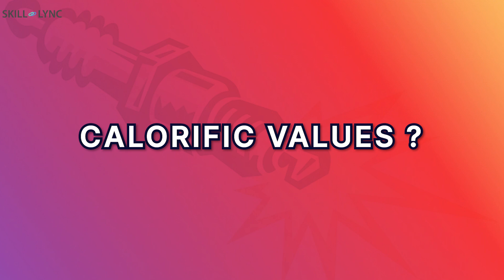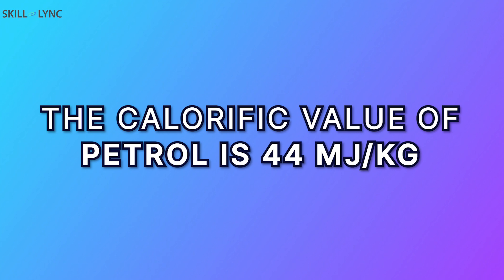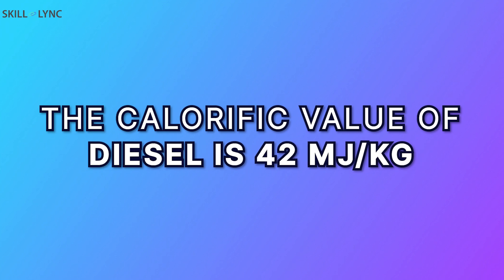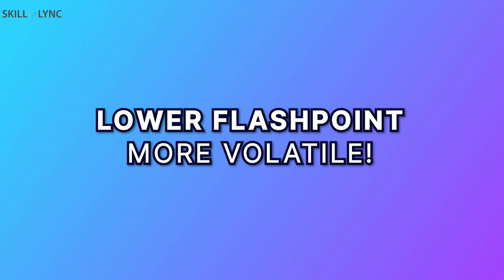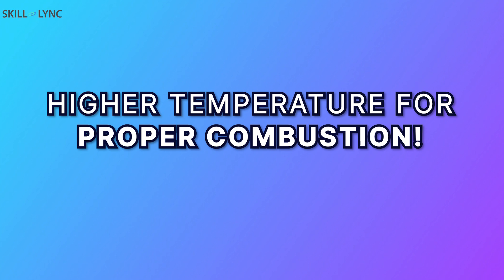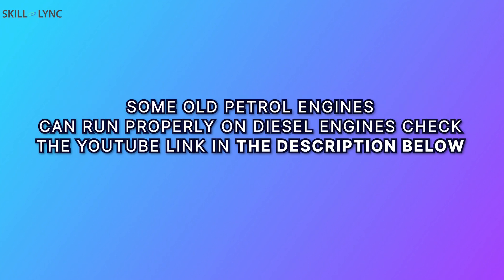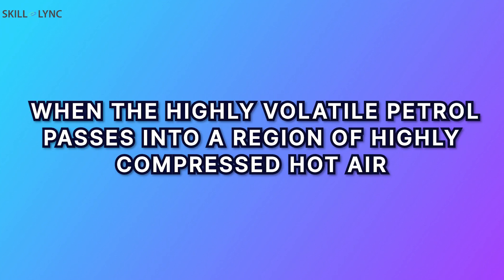What about the calorific values? Calorific value is the energy contained in the fuel, determined by measuring the heat produced by the complete combustion of a specified quantity of it. SI engines use petrol, which has a calorific value of 44 MJ per kilogram. On the other hand, CI engines use diesel, which has a calorific value of 42 MJ per kilogram. Petrol has a much lower flashpoint and higher volatility when compared to diesel. This means diesel requires a much higher temperature for proper combustion. If we use diesel to run a petrol engine, the engine may not start due to incomplete combustion of fuel, because combustion won't be initiated by the spark plug. On the other hand, using petrol in diesel engines may damage the engine components, because detonations are triggered when the highly volatile petrol passes into a region of highly compressed hot air.